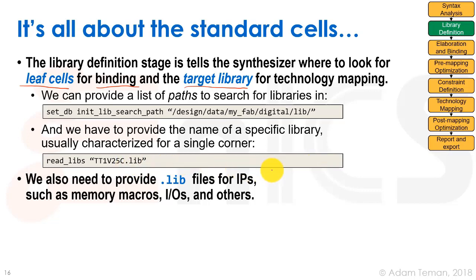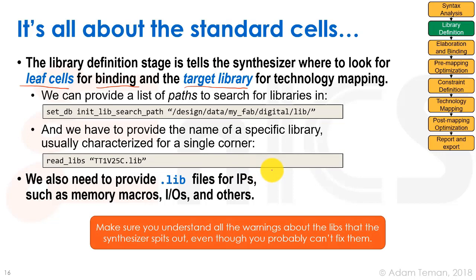We also need to provide a liberty file for all IPs such as memory macros, IOs, and others — all in this type of list. After running this command, the synthesis tool will parse all those library files. Library files contain a lot of information, and we'll likely get a bunch of warnings. We have to go over those and understand exactly what they mean. Any errors need careful attention, because they may indicate problems with our library description — garbage in, garbage out.